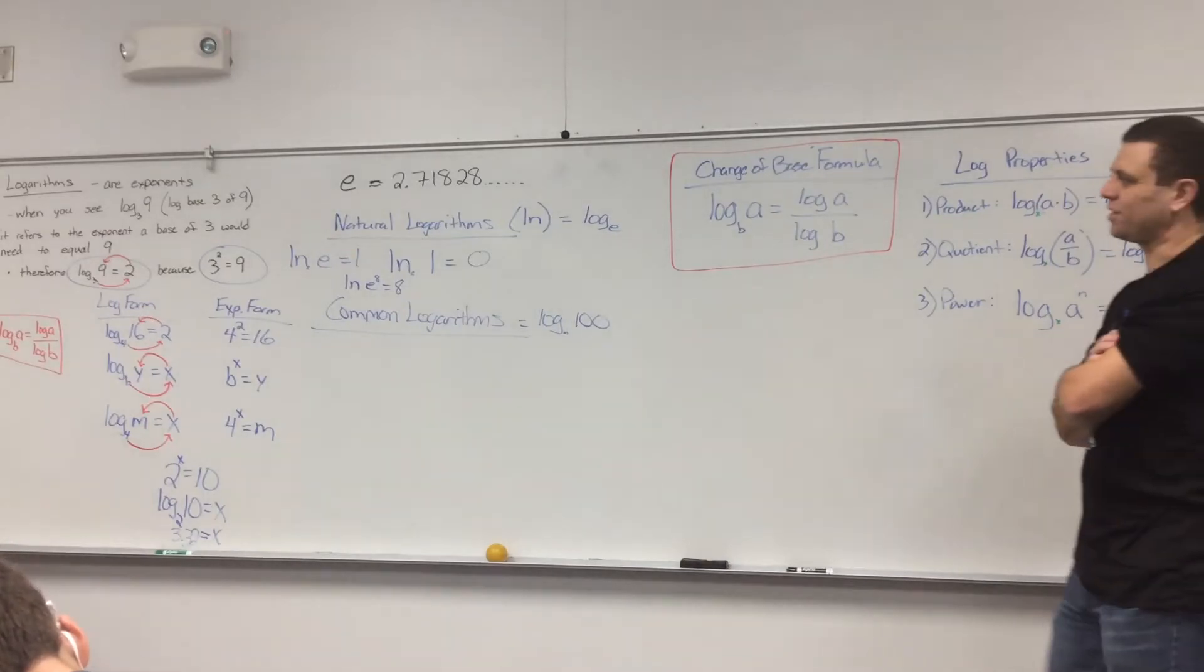If that compound interest was calculated nonstop, like every millisecond, that's how much you'd have at the end of the year. That's where the limit is. That's like the highest it can get. So that's kind of how E was discovered and then ended up happening in a whole bunch of other places. You don't need to know that, just a little history there.